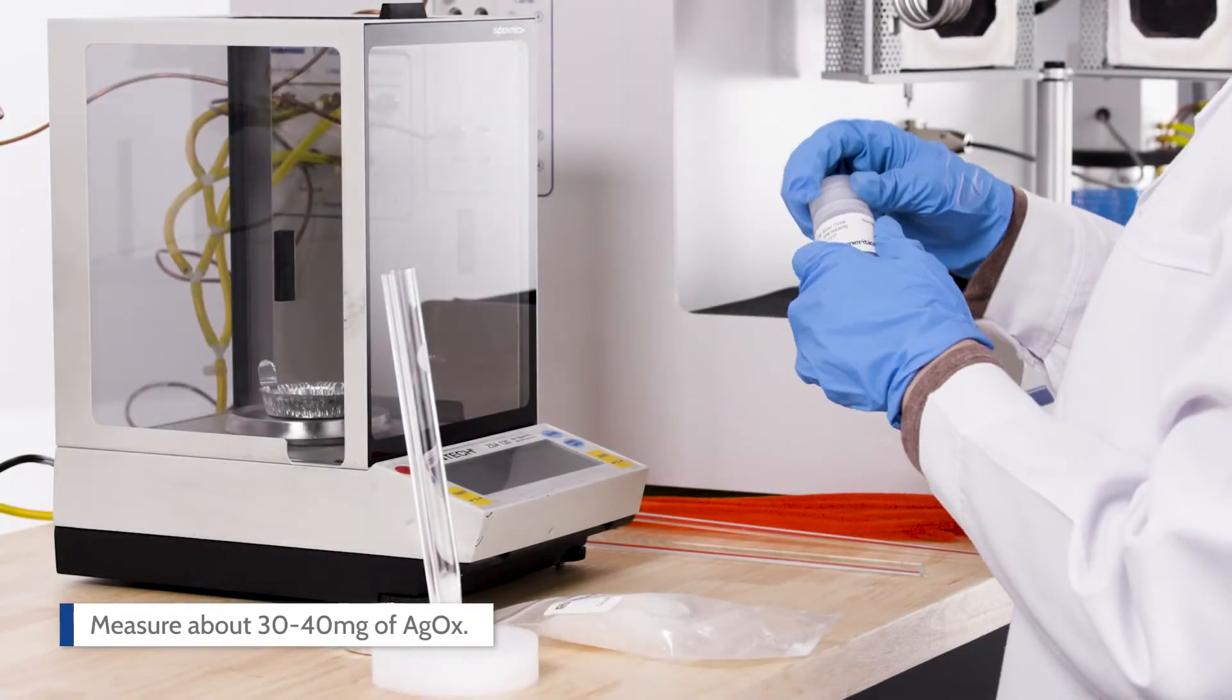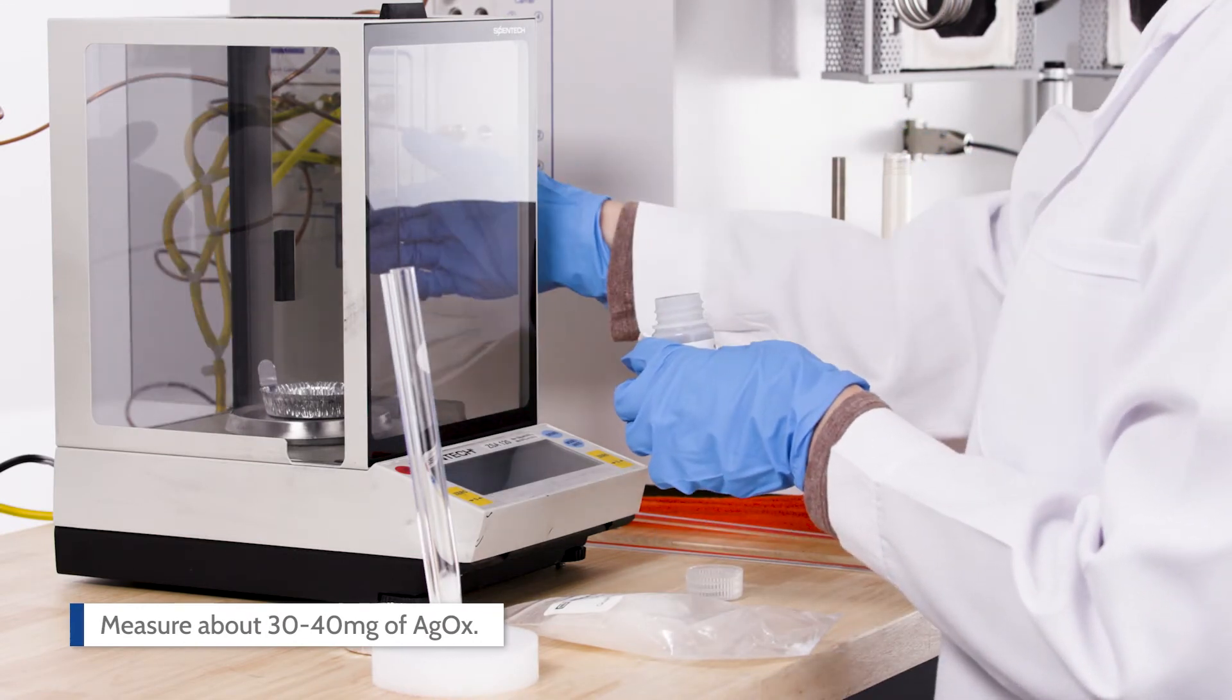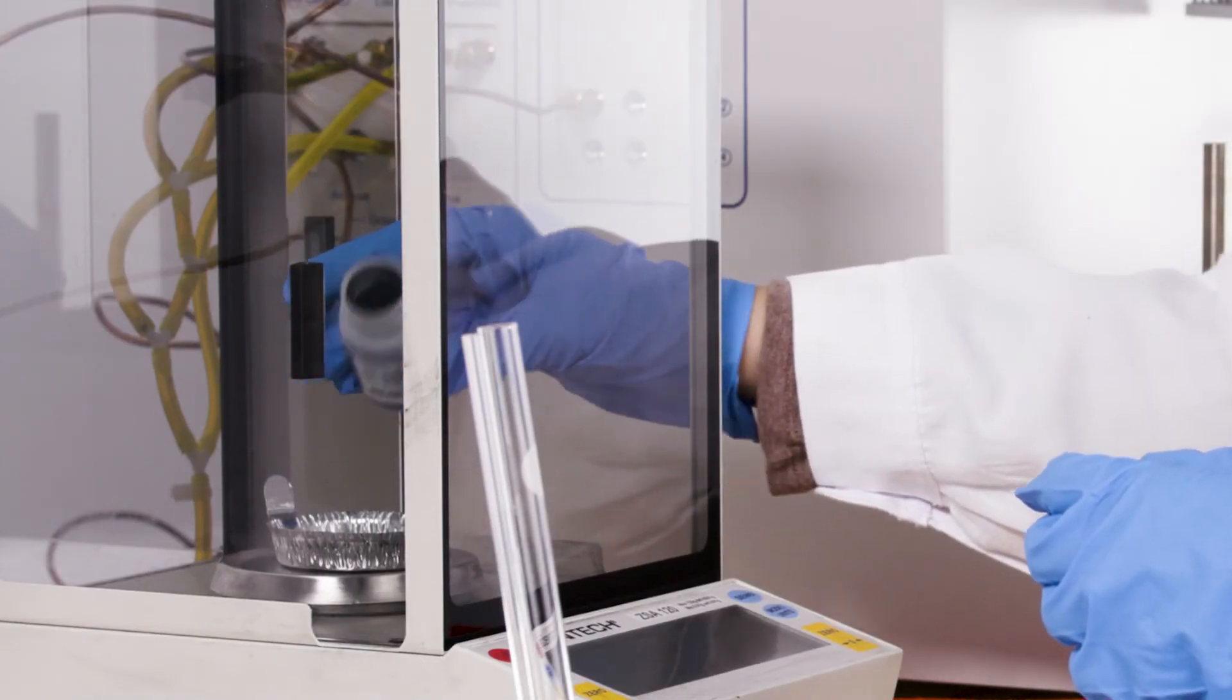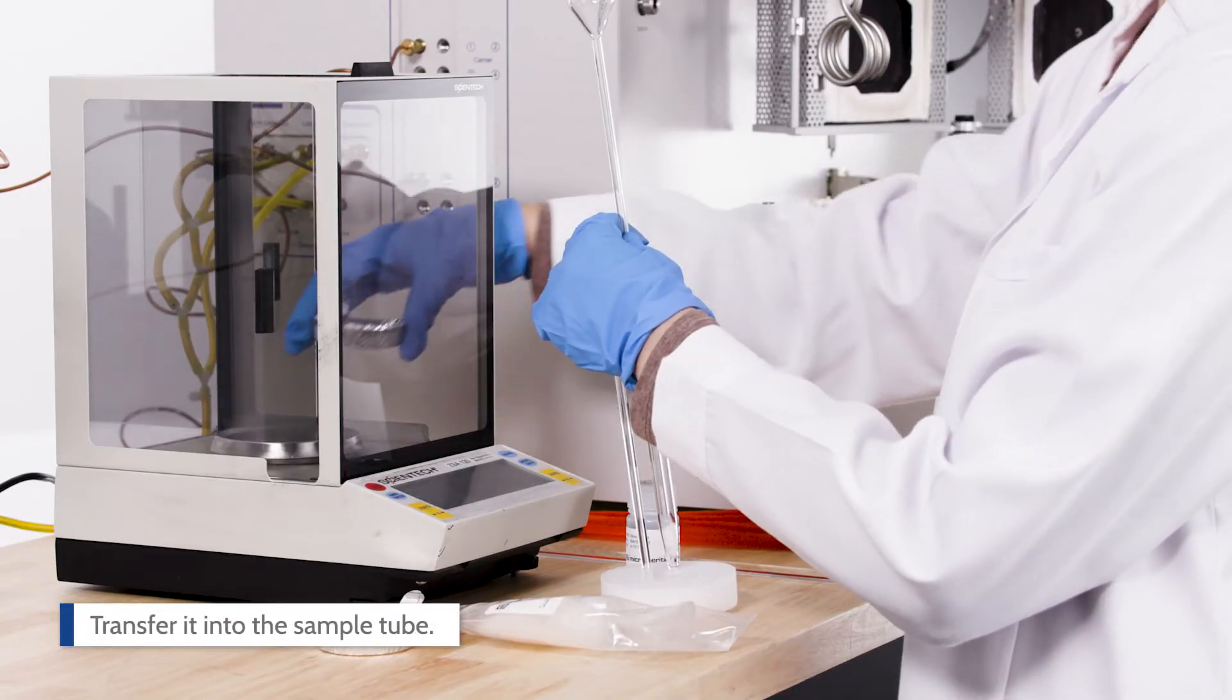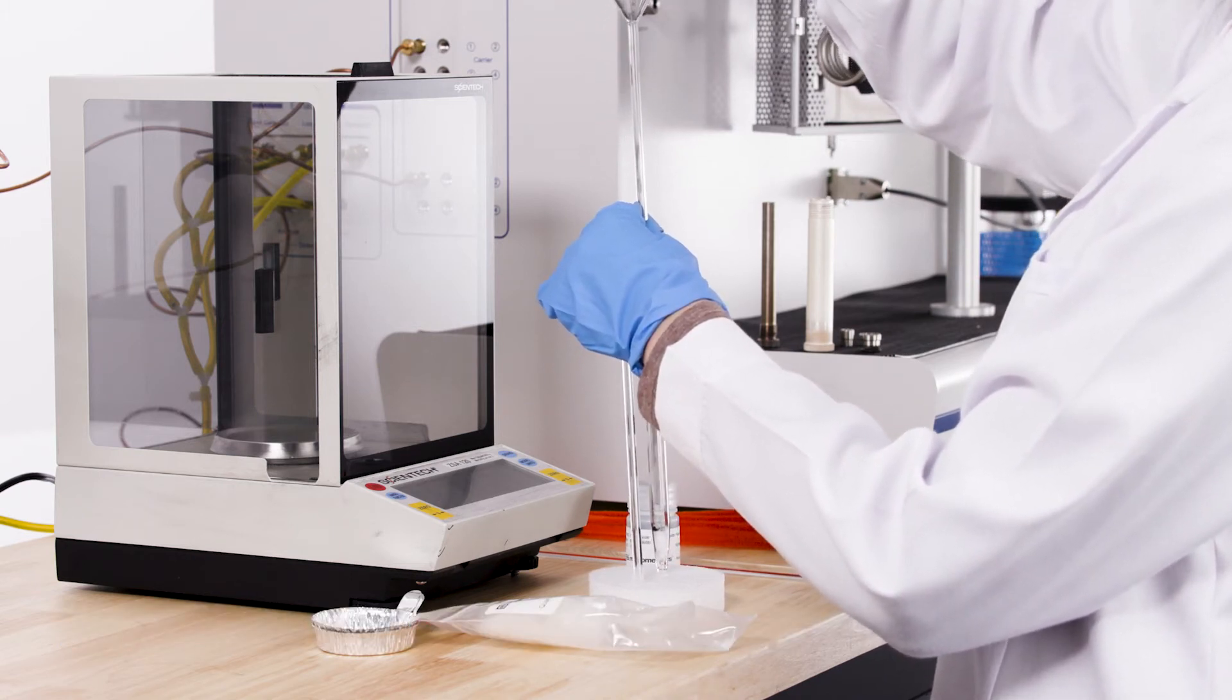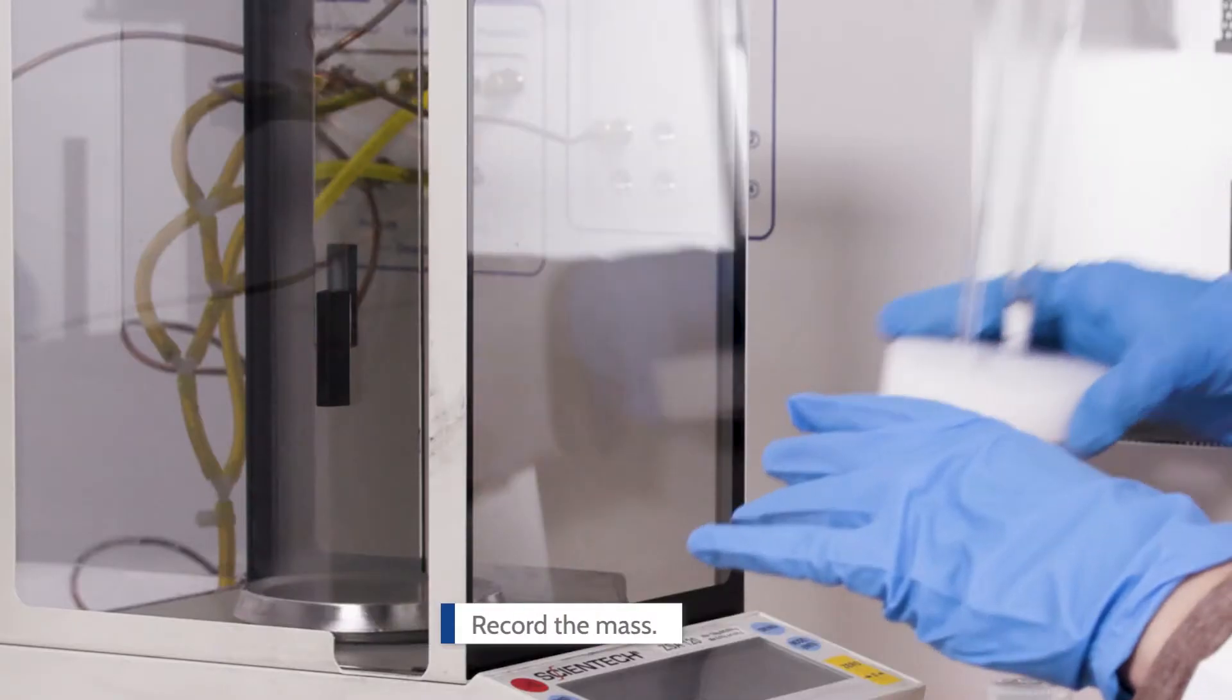Measure about 30 to 40 milligrams of silver oxide and transfer it into the sample tube and record the mass.